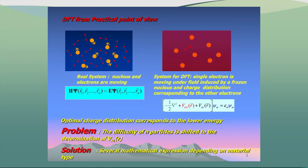This is DFT from an experimental point of view. It is an approximation, and this approximation consists in replacing a real system by another system. In the real system, every atom has moving nuclei and electrons. In the new system, we will have only one moving electron, but in the field created by a frozen nucleus and the charge distribution of the other electrons.